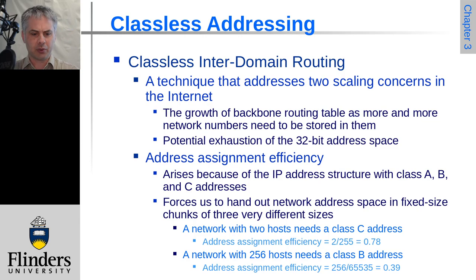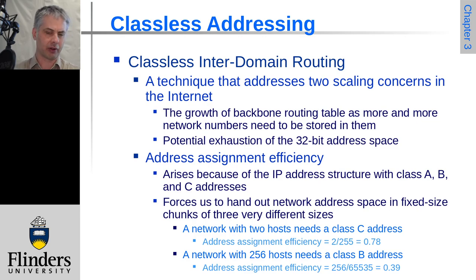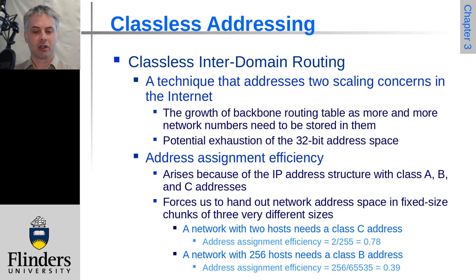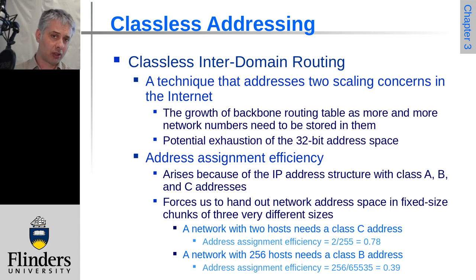The other issue was address assignment efficiency. If you get allocated a class A network you get 16.7 million IP addresses; a class B gives you 65,536; a class C gives you 256. But what if you only needed 300 addresses? A class C doesn't fit, so you get given a class B and you're now using 300 of 65,536 addresses — that's less than half a percent efficient.